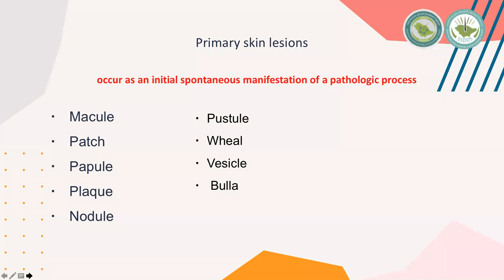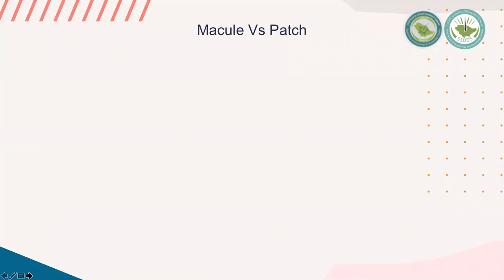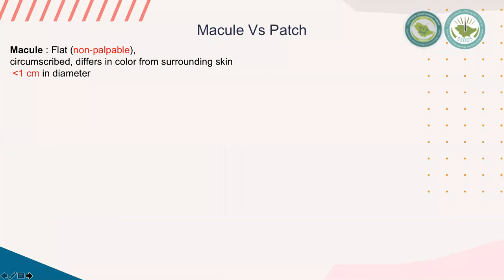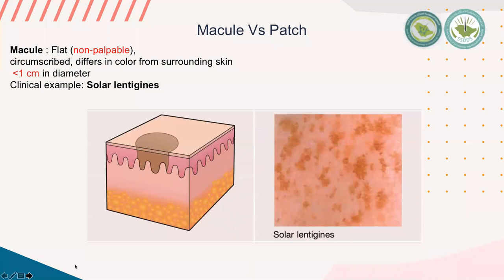First, macule versus patch. A macule is a flat, non-palpable, well-circumscribed lesion characterized by a difference in color from the surrounding skin. In the case of a macule, it is less than one centimeter in diameter. A clinical example is solar lentigines — we can see these hyperpigmented brownish macules and some patches also.